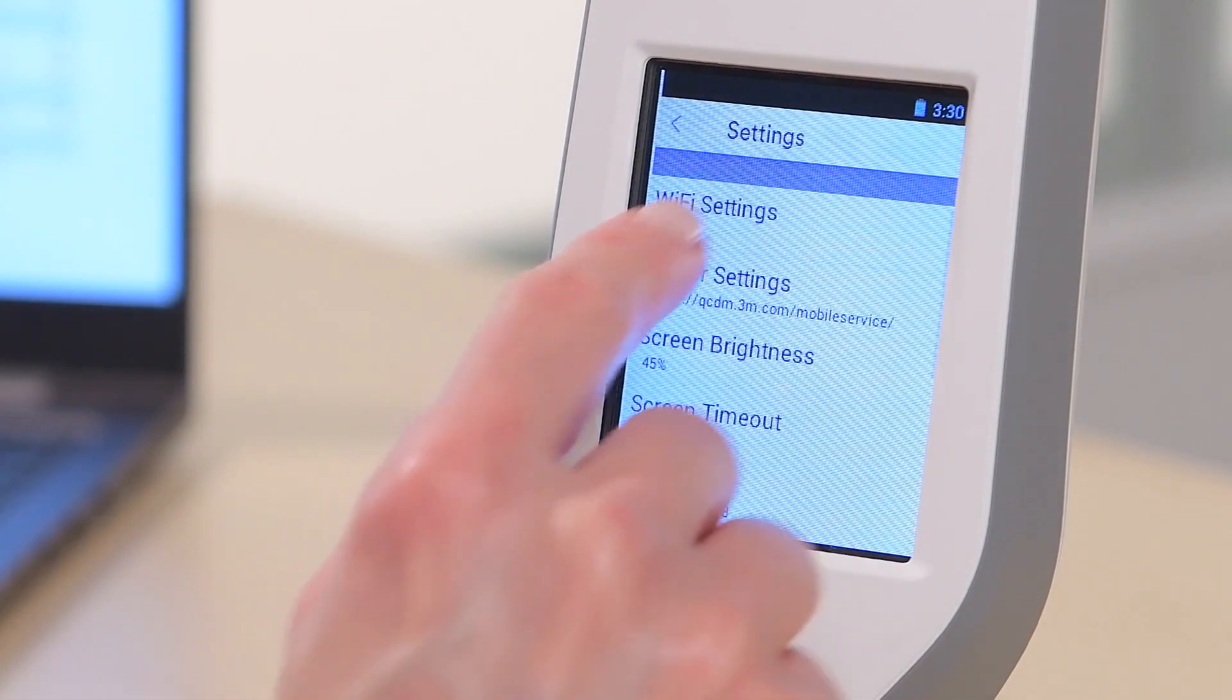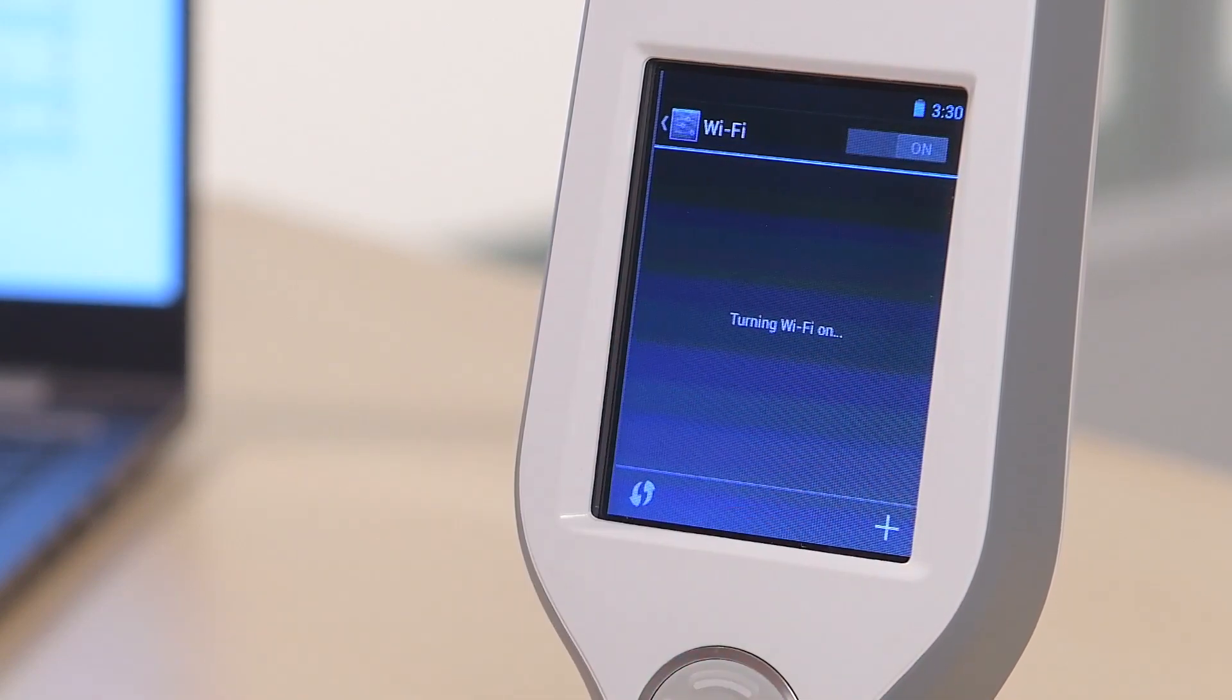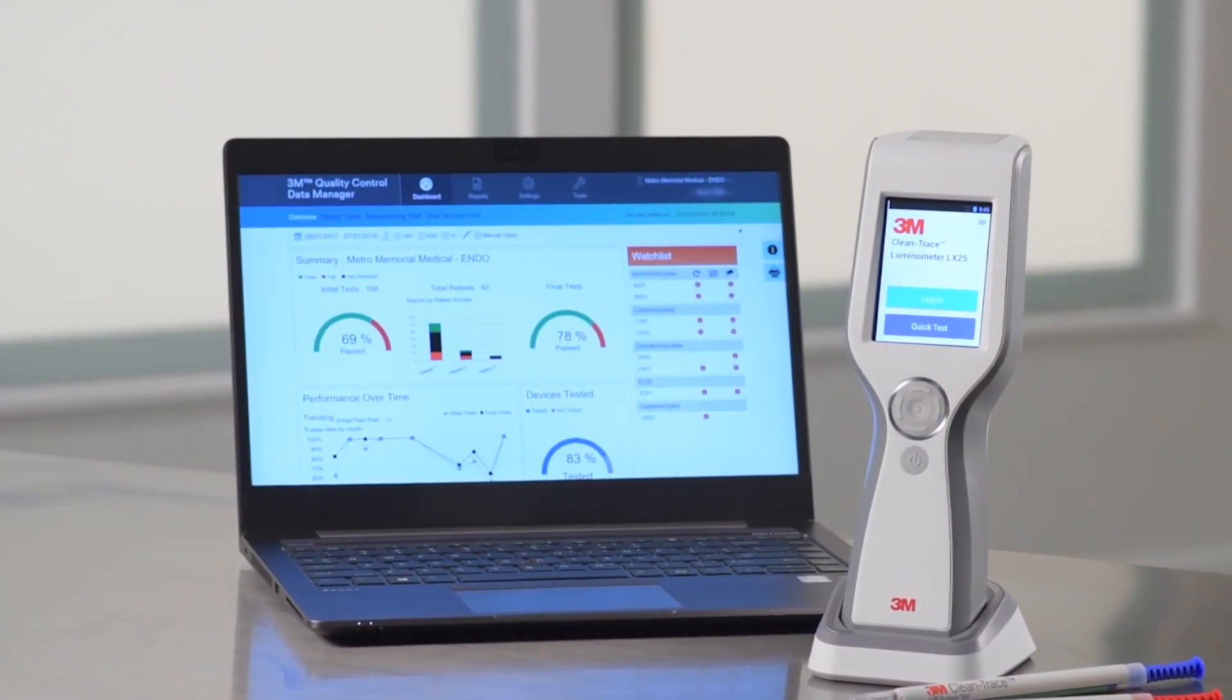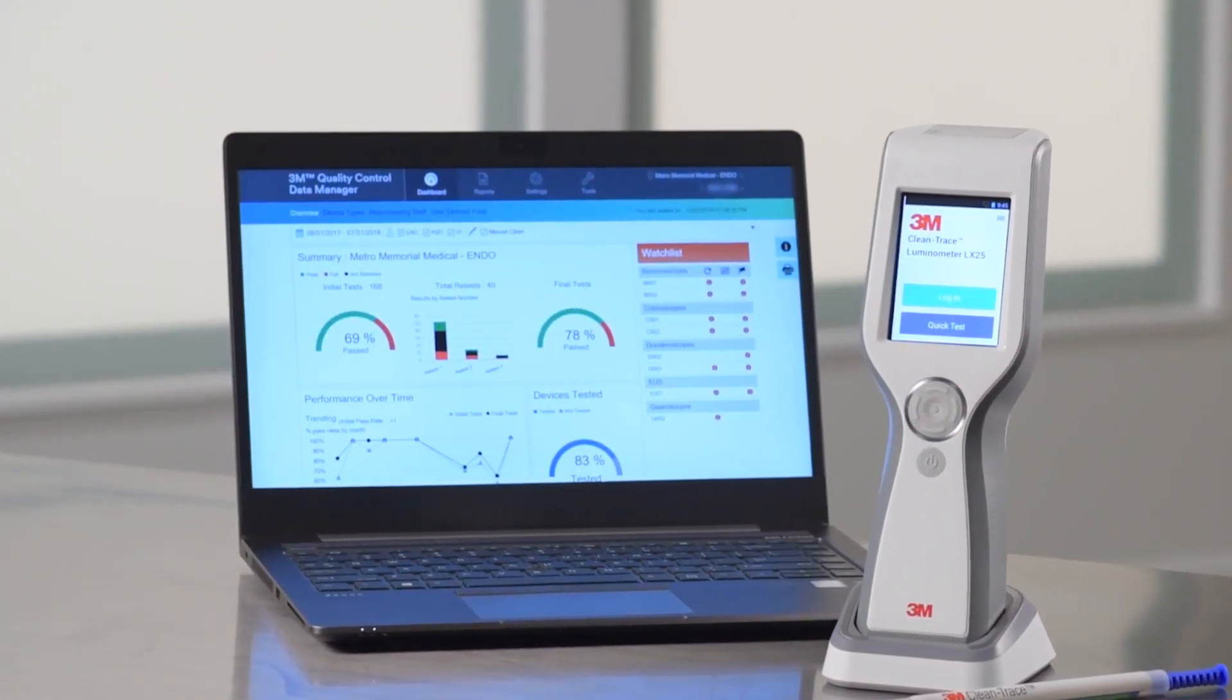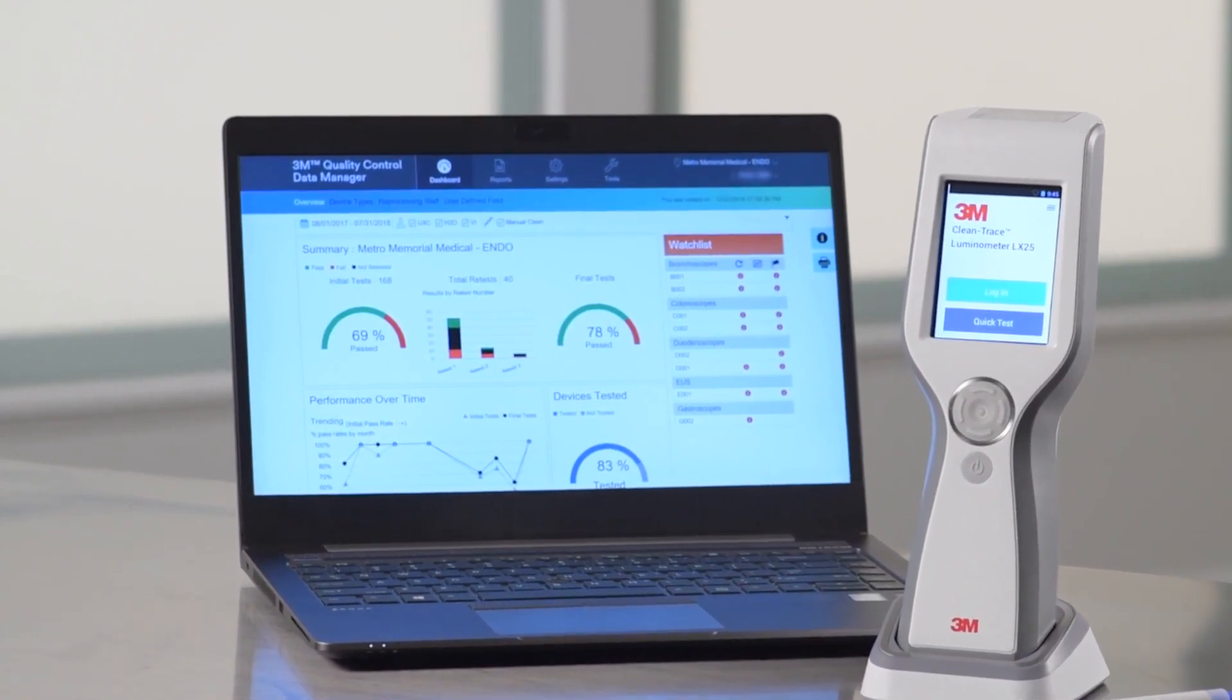When connected to Wi-Fi, your result will be transmitted wirelessly from the Luminometer to the 3M Quality Control Data Manager. This online hosted service allows you to identify weak spots, problem areas and trends, improving and streamlining your entire cleaning process.